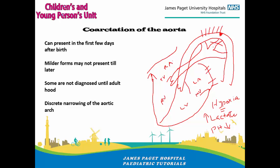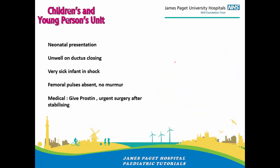If the narrowing is really mild, it may not present until later because it might allow blood to pass adequately, at least to begin with. They may not present until later in childhood or even in adulthood. This is particularly true in cases where there are collaterals bypassing the coarctation — someone with collaterals may not present until adulthood. So the variation in presentation is huge.